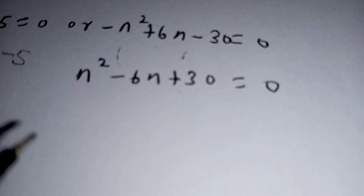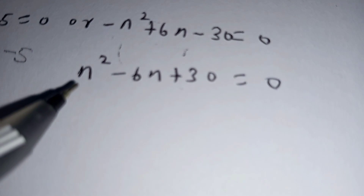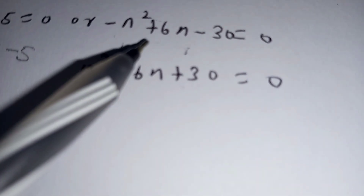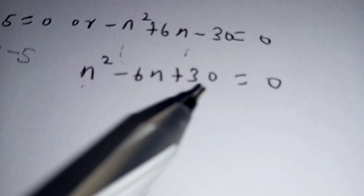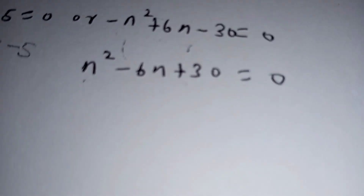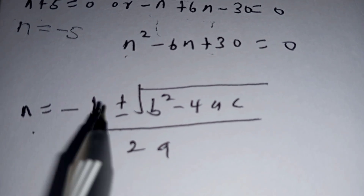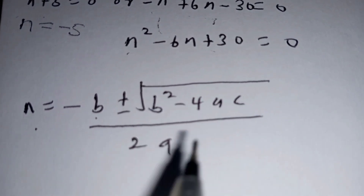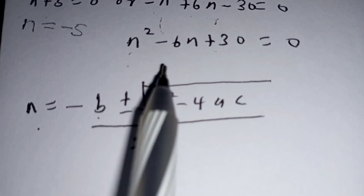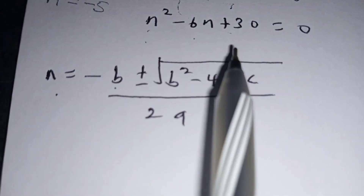The quadratic equation we are going to solve by use of the quadratic formula. So dividing through by negative 1: n squared divided by negative 1 will be n squared, negative 1 divided by 6n will be negative 6n, and negative 1 divided by negative 30 will be positive 30, equal to 0. Applying the quadratic formula: n equals negative b plus or minus square root of b squared minus 4ac, divided by 2a. In our case, a is 1, b is negative 6, and c is 30.